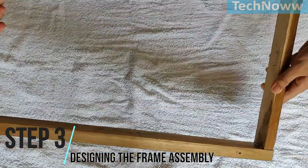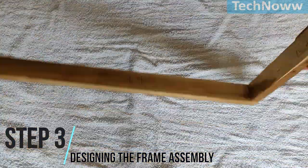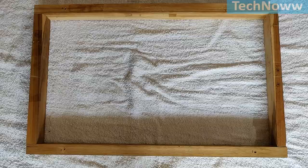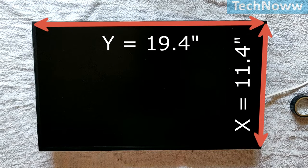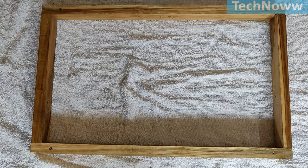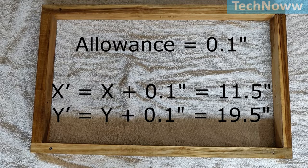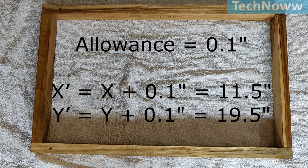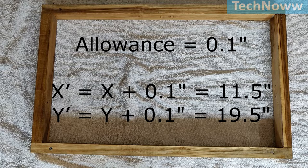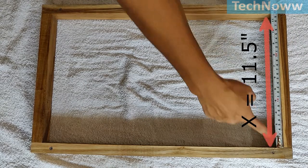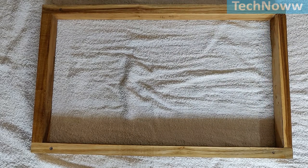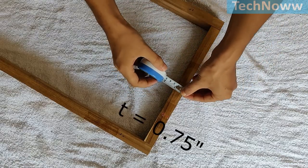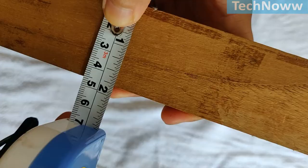Step 3: Designing the frame assembly. Next we need to design the frame for our mirror. I am using custom made frame using wood as the material of construction. Keep in mind that above noted X and Y dimensions of the screen are the exact dimensions to fit the screen inside the frame rounded off to the next value. Considering my allowance as 0.1 inches, my internal frame dimensions should be X dash is equal to 11.5 inches whereas Y dash is equal to 19.5 inches. Now we have to prepare the frame that will have internal dimensions as 11.5 inches and 19.5 inches.